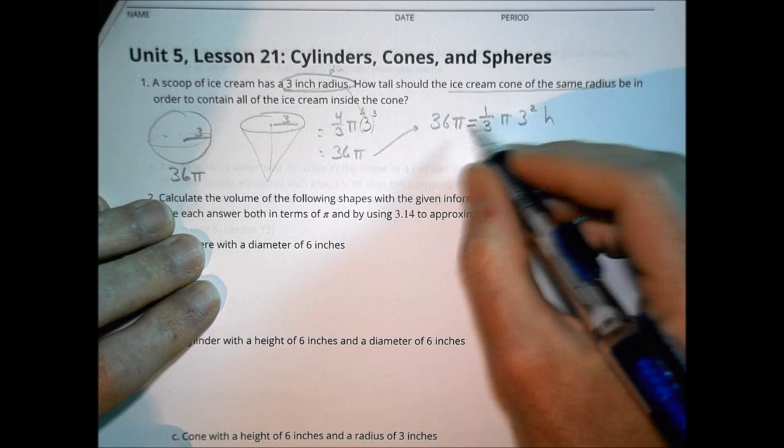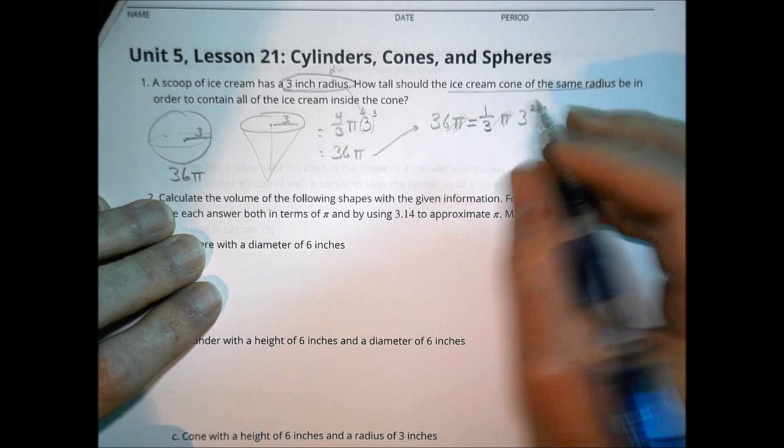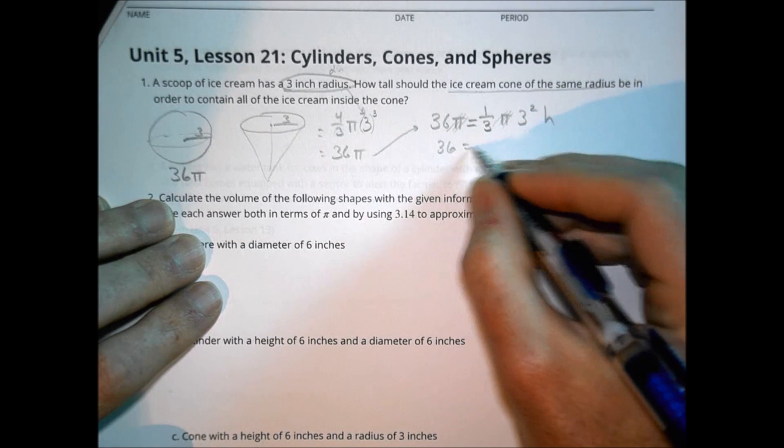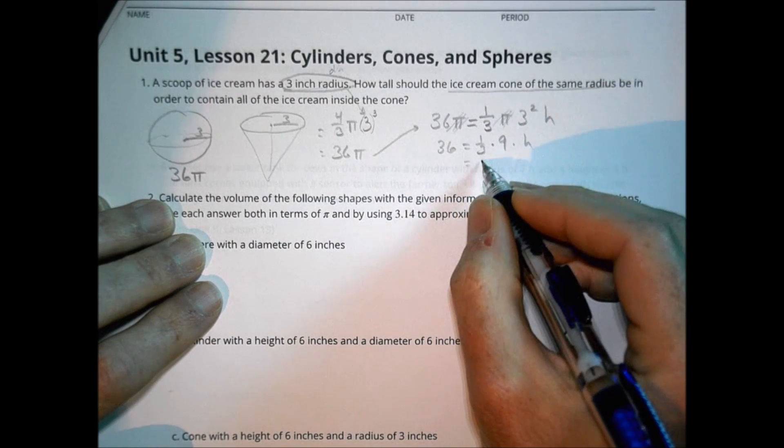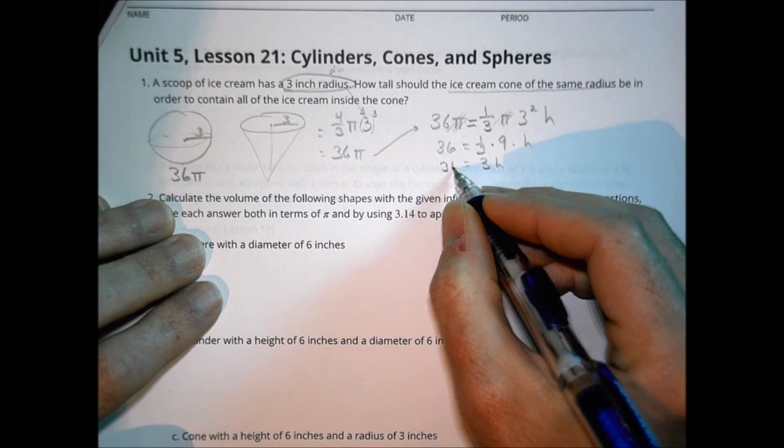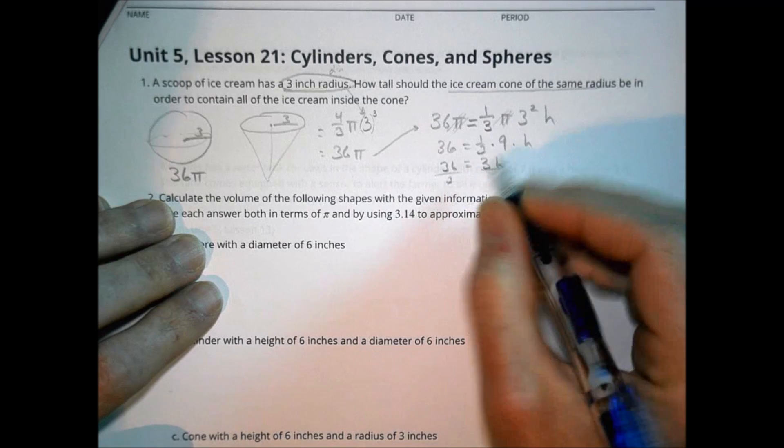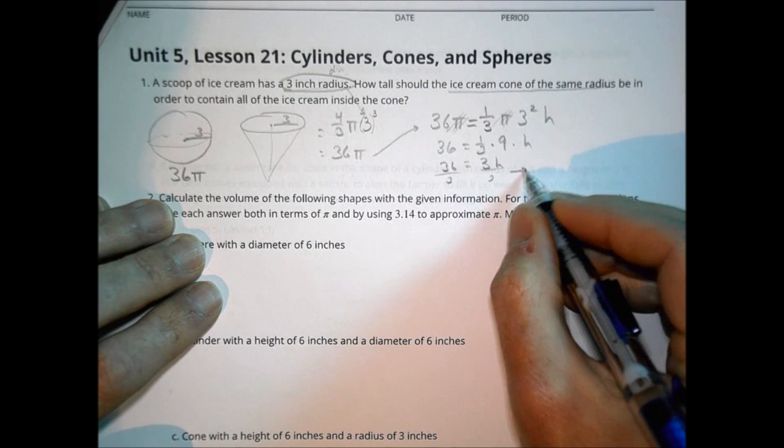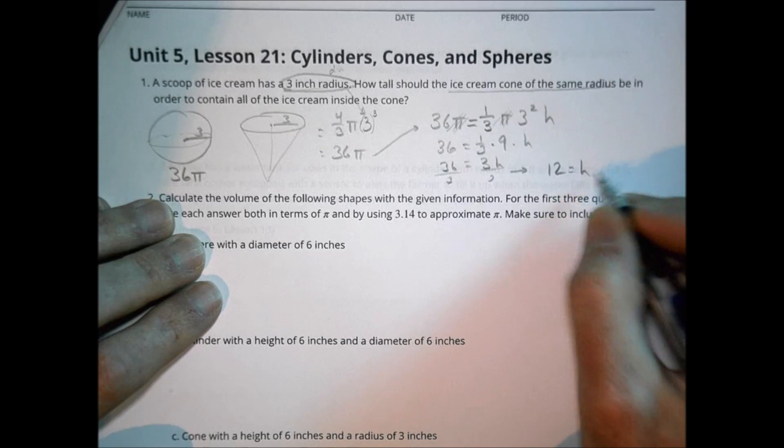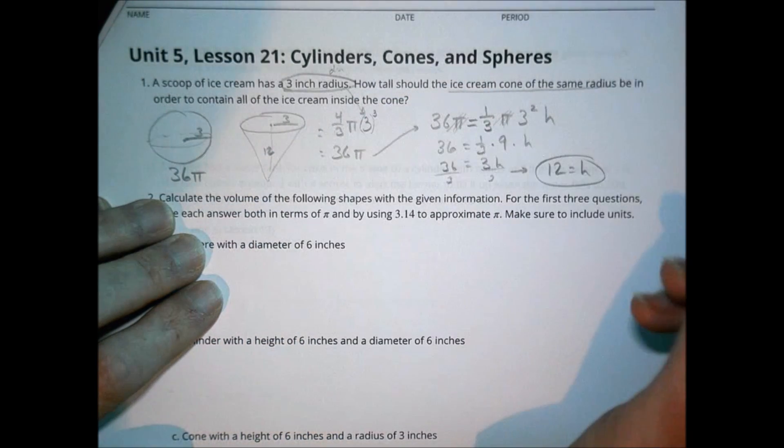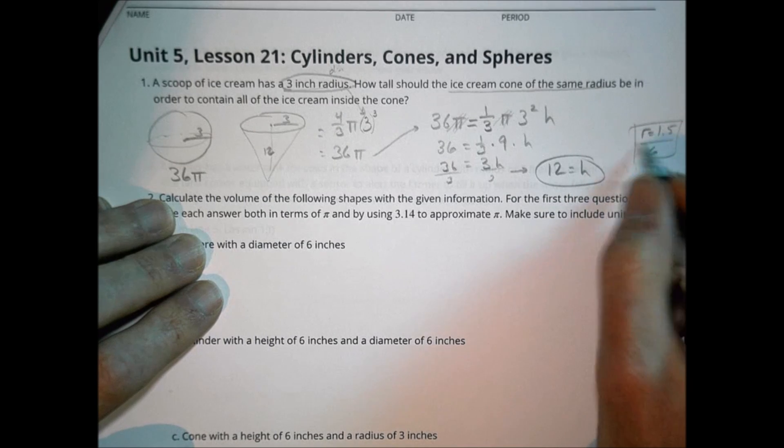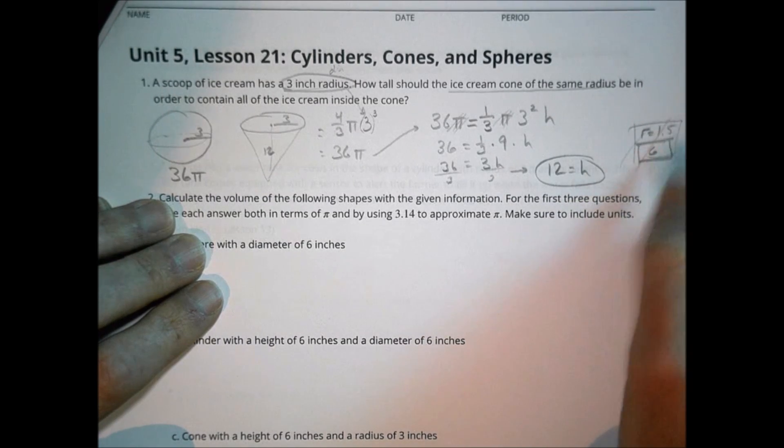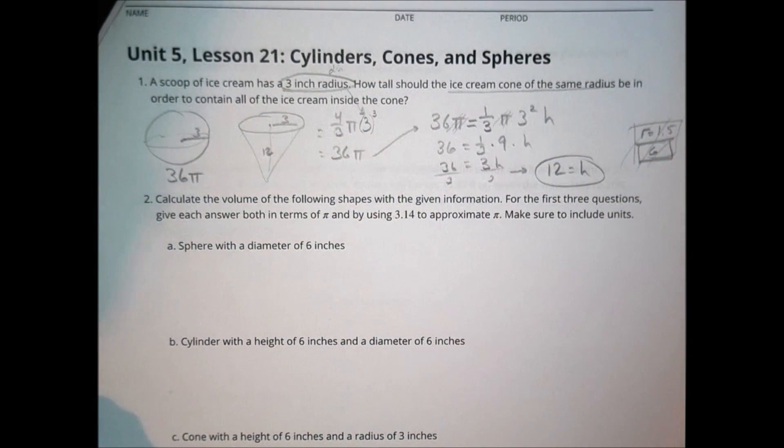We want to make sure that our cone can hold all 36 pi in the volume of the ice cream in it. So we're going to set that equal to the formula for a cone. The cone is going to be one third times pi times the radius, which is three squared, times the height, which we don't know. We have pi on both sides, so we can eliminate the pi. So we have 36 equals one third times nine times h. Nine divided by three is going to be three h. So 36 equals three times h. Divide both sides by three. And what we have left, 36 divided by three is 12. So the height of the cone here should be 12 to make that work. Again, my answer key said six, but six works if the radius is 1.5. So that's not what my answer is because my radius was three.